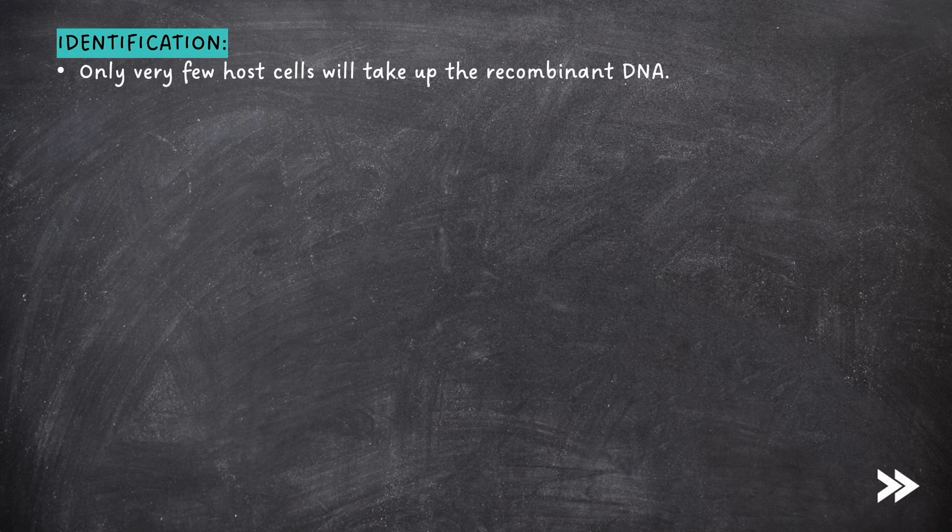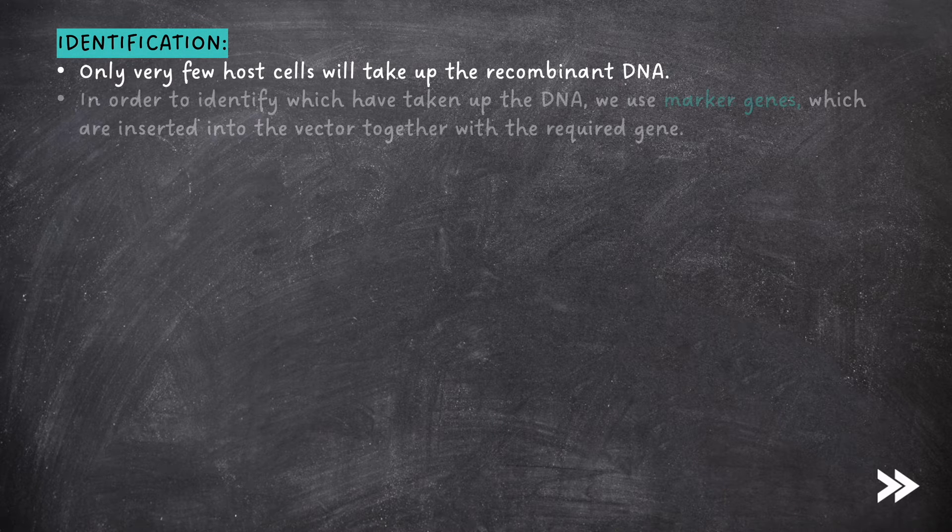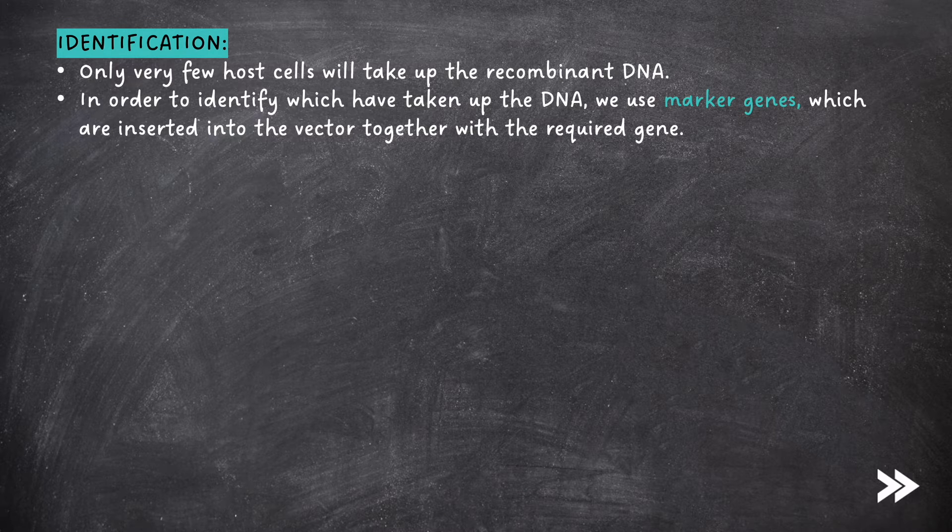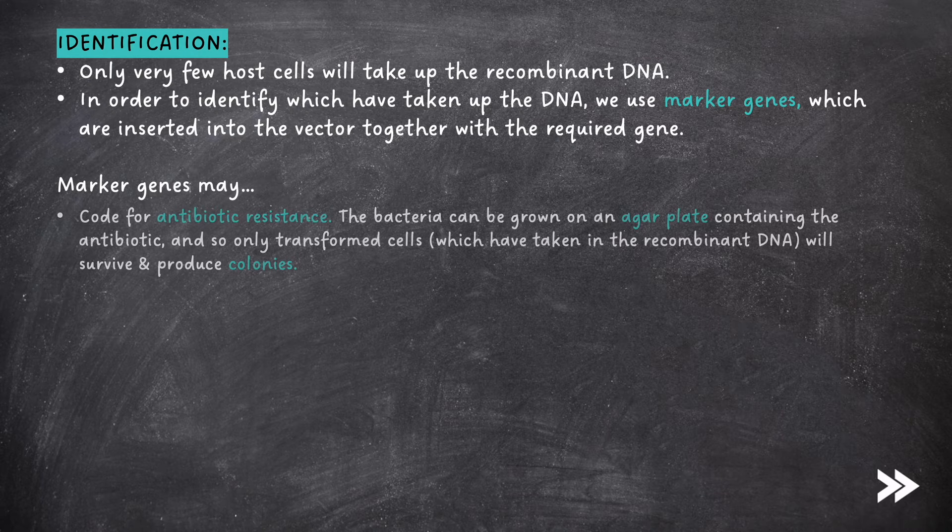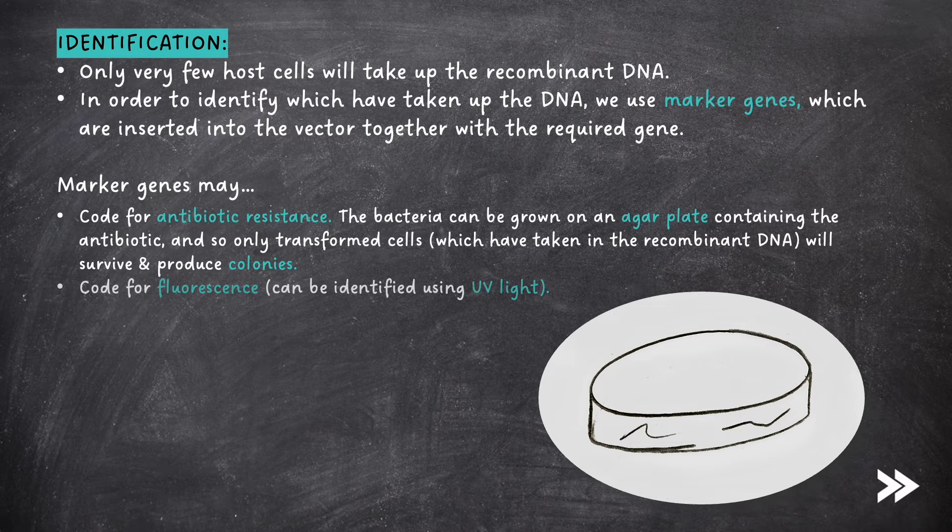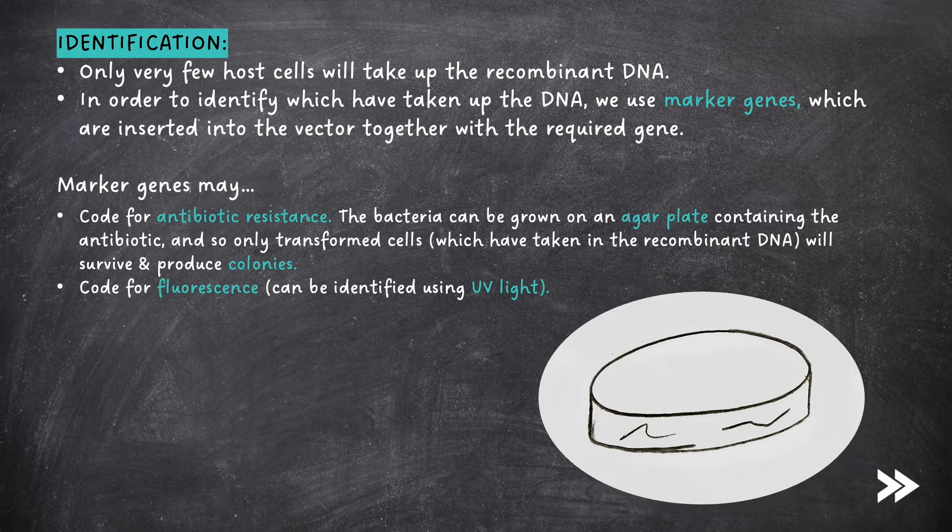Then we have identification. Only very few host cells will take up the recombinant DNA. In order to identify which have taken up the DNA, we use marker genes which are inserted into the vector together with the required gene. Marker genes may do two things. First, they may code for antibiotic resistance. The bacteria can be grown on an agar plate containing the antibiotic, and so only transformed cells, i.e. cells which have taken in the recombinant DNA, will survive and produce colonies. Marker genes also may code for fluorescence. The cells which have taken in the recombinant DNA can then be identified using UV light.